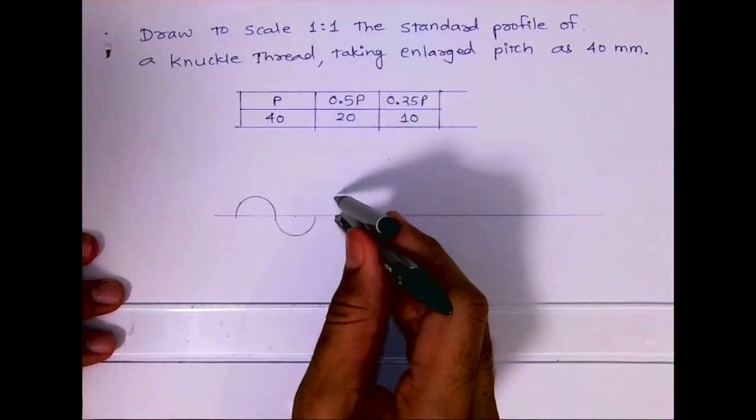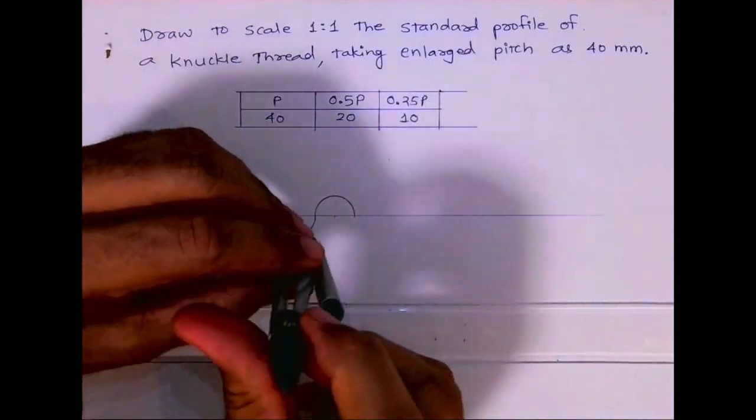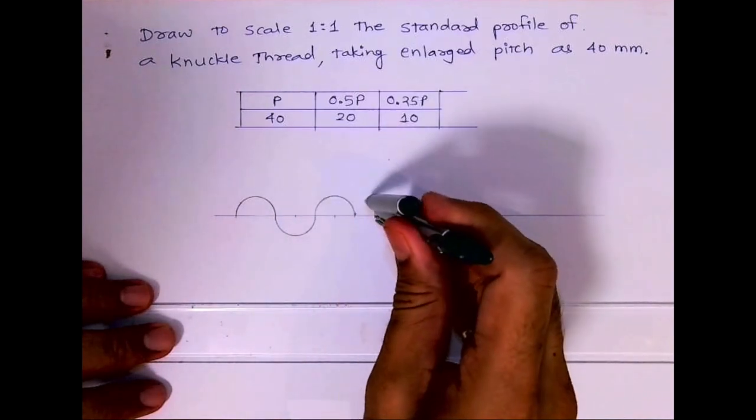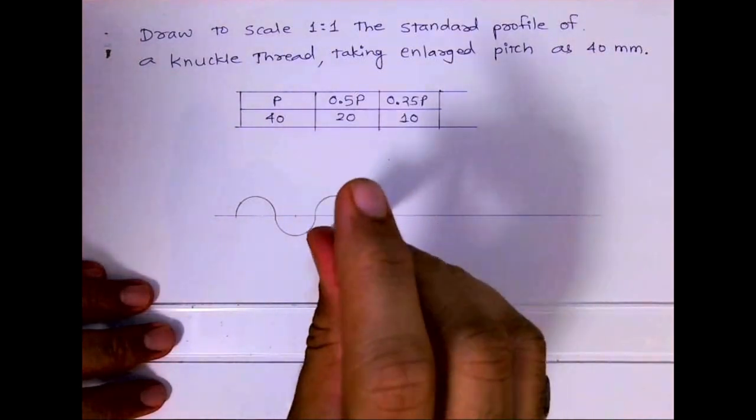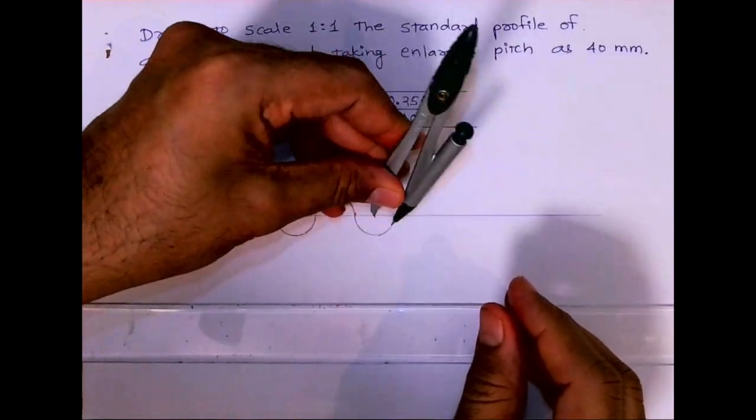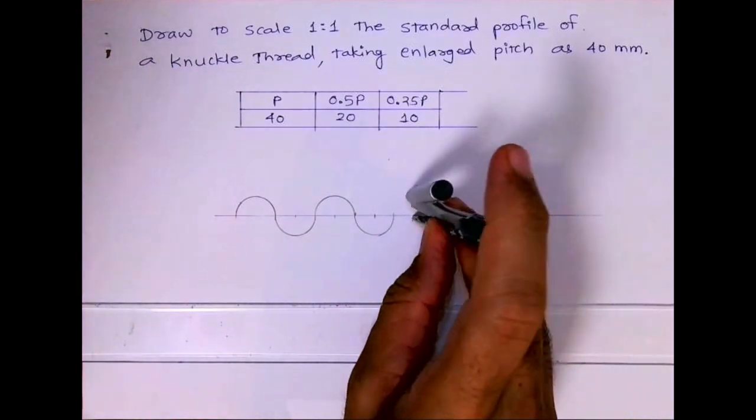Then from here again you cut, and from here again you draw a curve. So this way you can do three or four curves, and then you can draw a freehand line.